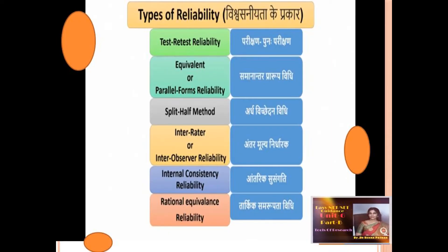In the chart, you can see the first type is the test-retest reliability. In this method, the same test is given to the same group on two occasions and the correlation coefficient between the two sets of scores is determined. The next type is the equivalent or the parallel form type of reliability. In this method, two parallel forms of the test are given to the same group on two occasions and correlation between the scores on the two forms is calculated.